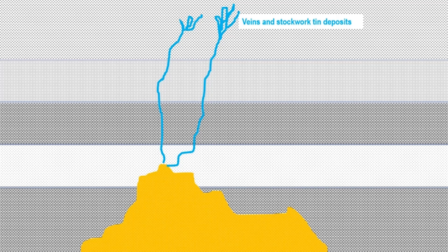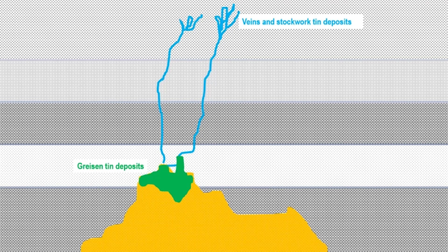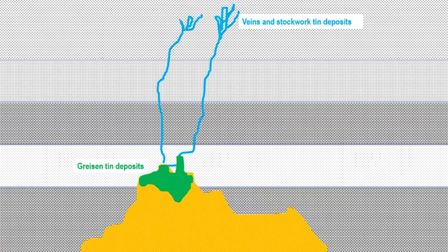The next type of deposits are greisens, shown here in green. Greisens represent the very last of the fluid from the cooling magma, which pools above the intrusion and is injected back into the cooled igneous intrusion to form a thin network of boxy quartz veins and tin-rich veins.